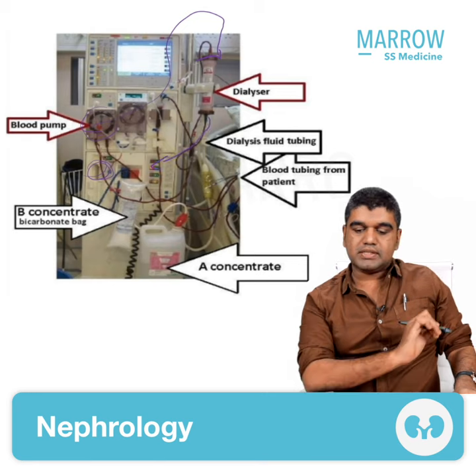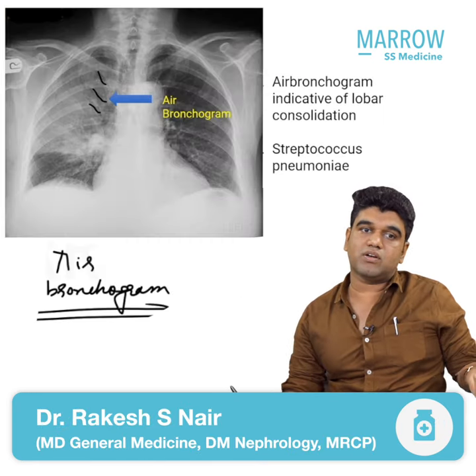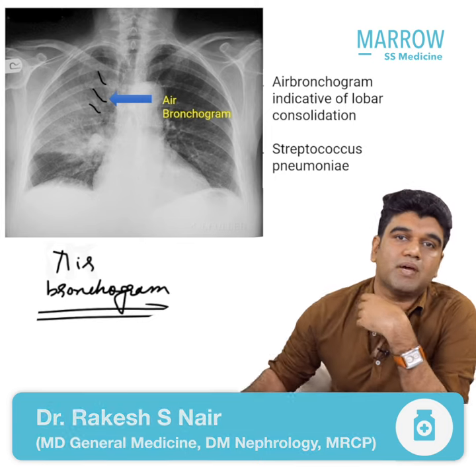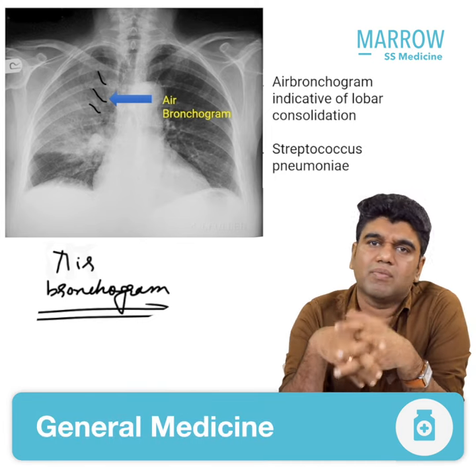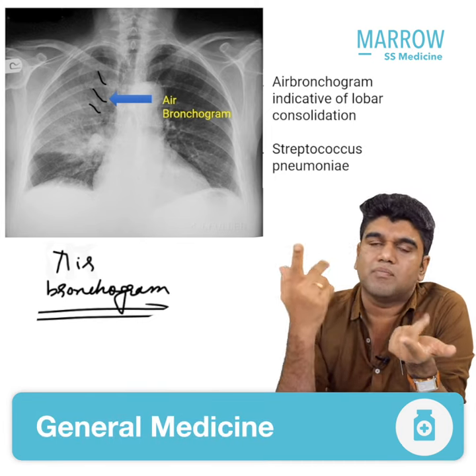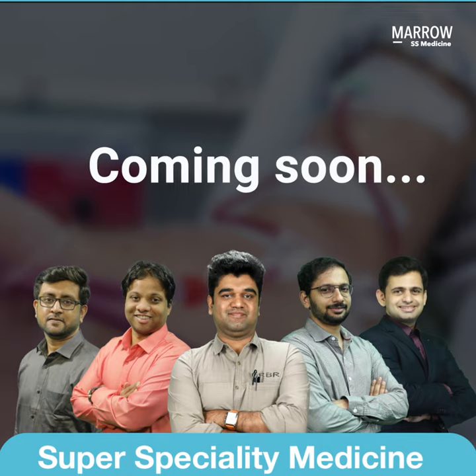The blood is leaving the dialyser in this direction. When the alveoli are affected by consolidation, the air-filled bronchi are seen to be very visible — this is called an air bronchogram. Air bronchogram may be seen in many other conditions including pulmonary edema, ARDS, bronchioloalveolar carcinoma, and hyaline membrane disease.